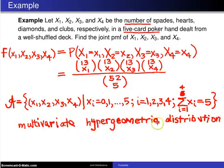This multivariate hypergeometric distribution is a little bit misleading, because it turns out that it really only requires three variables here, not four. Because once you have the number of spades, hearts, and diamonds pinned down, you know exactly how many clubs there are.